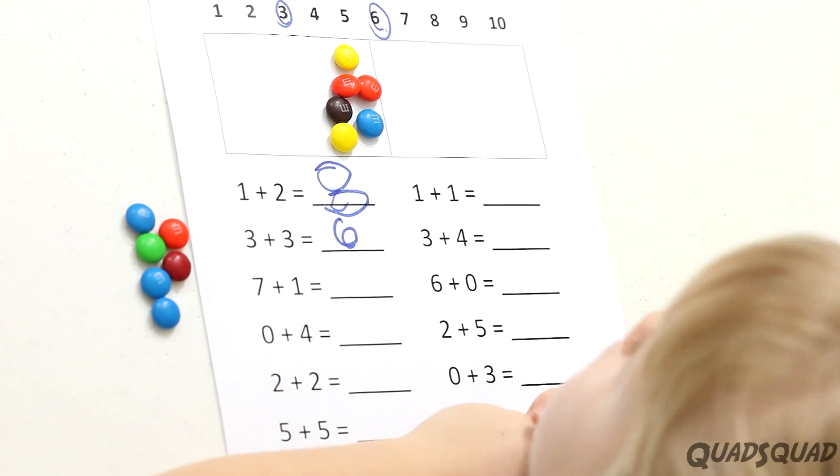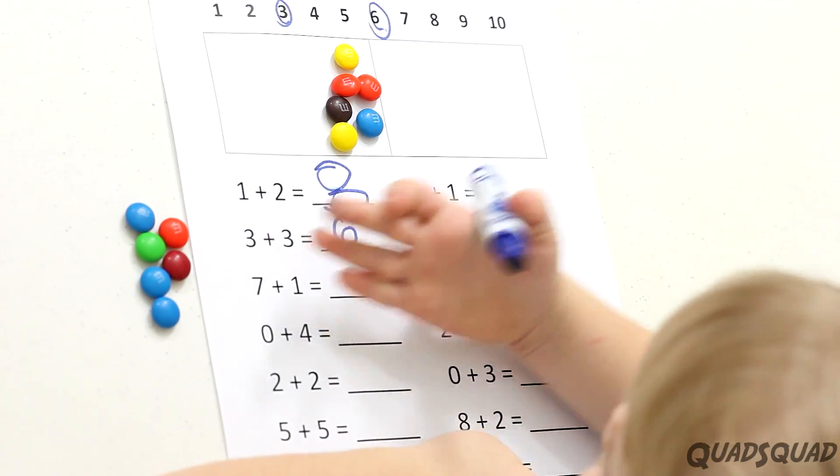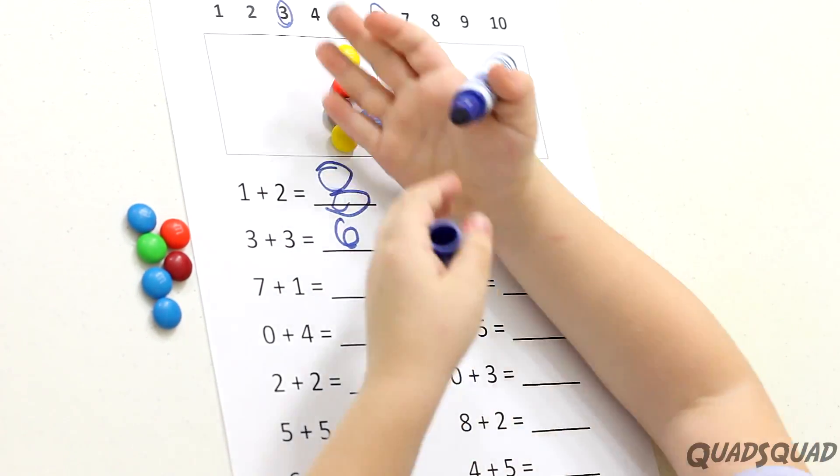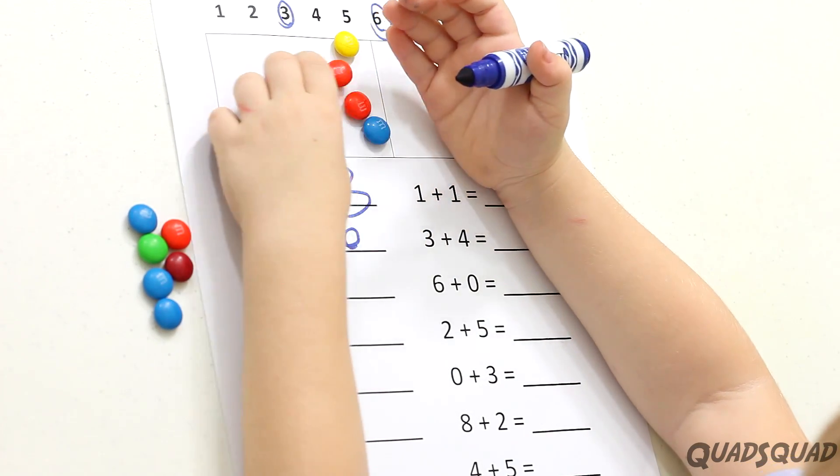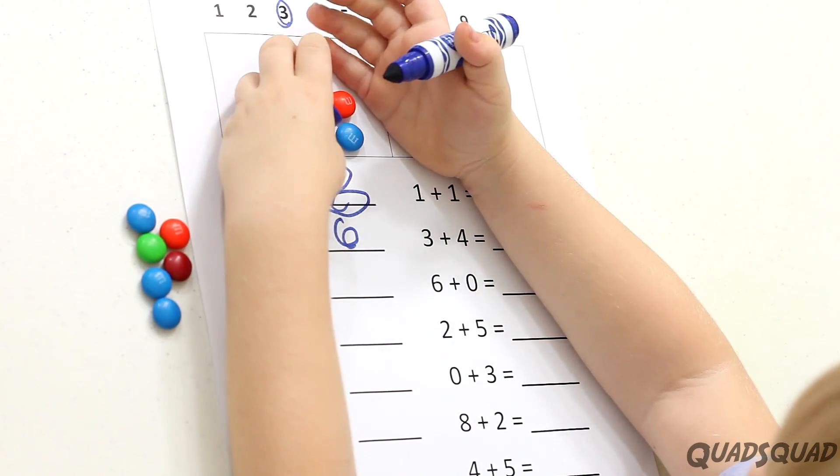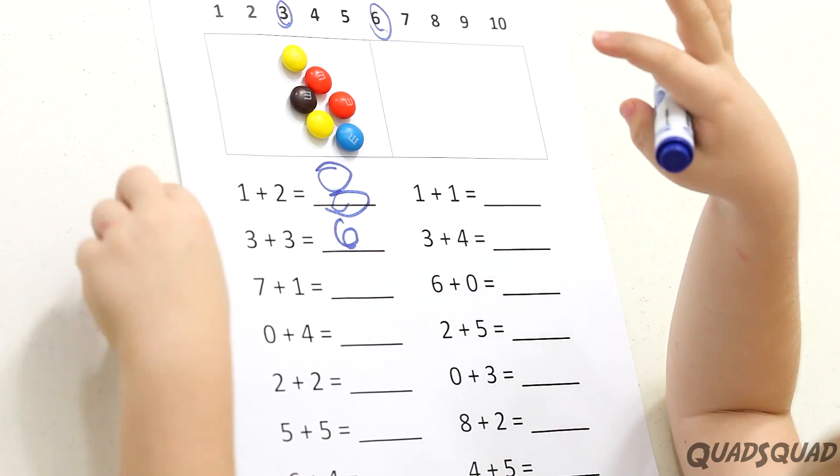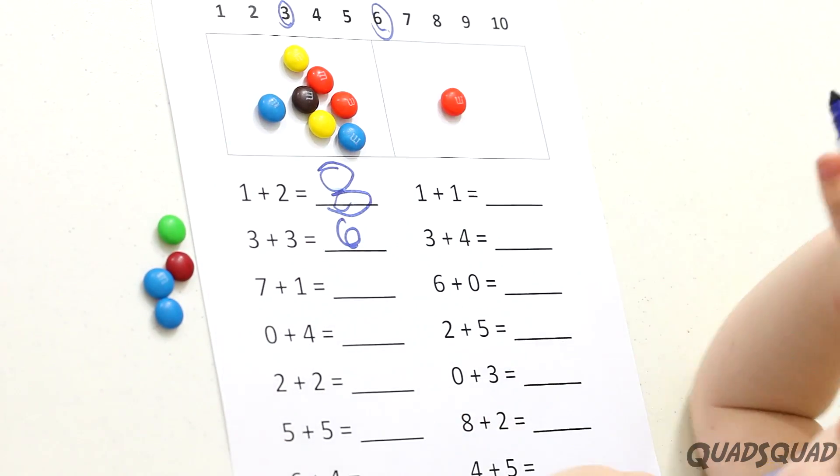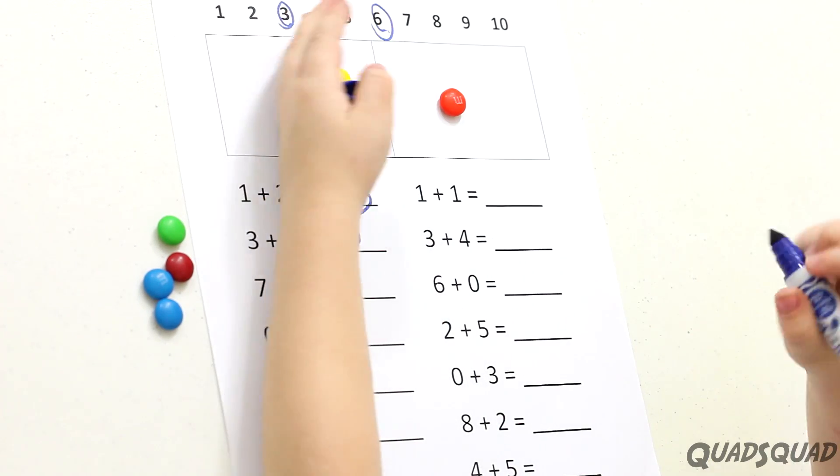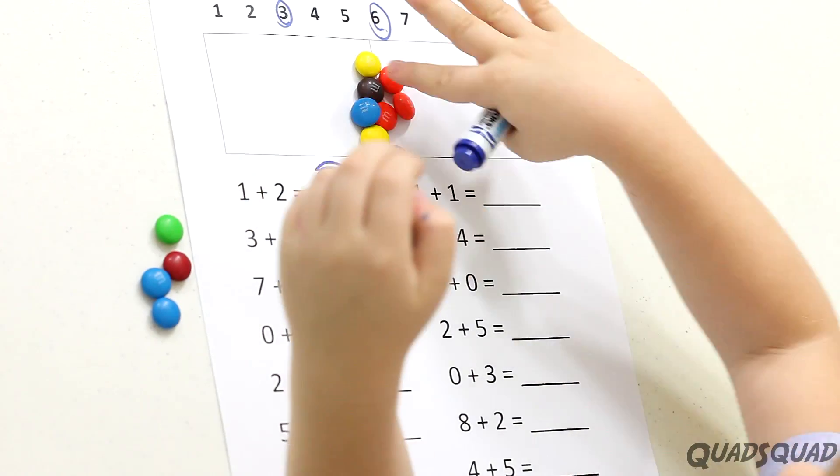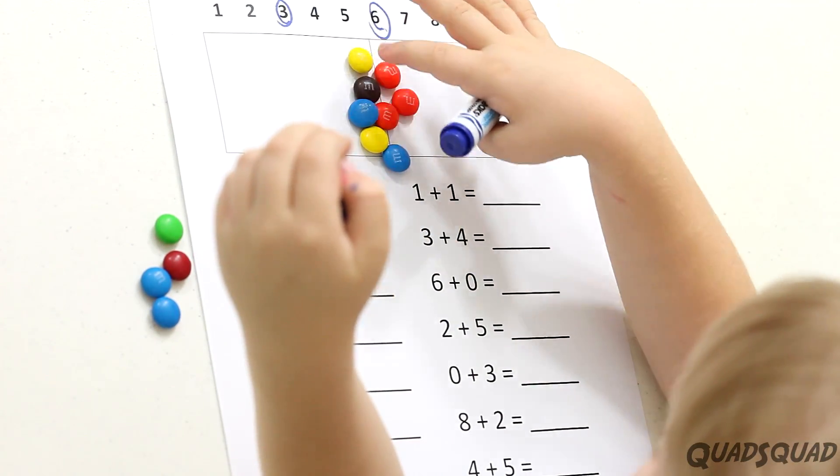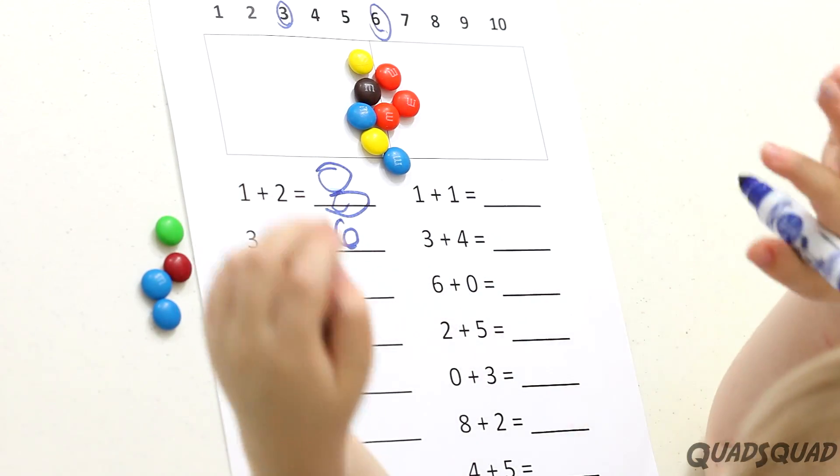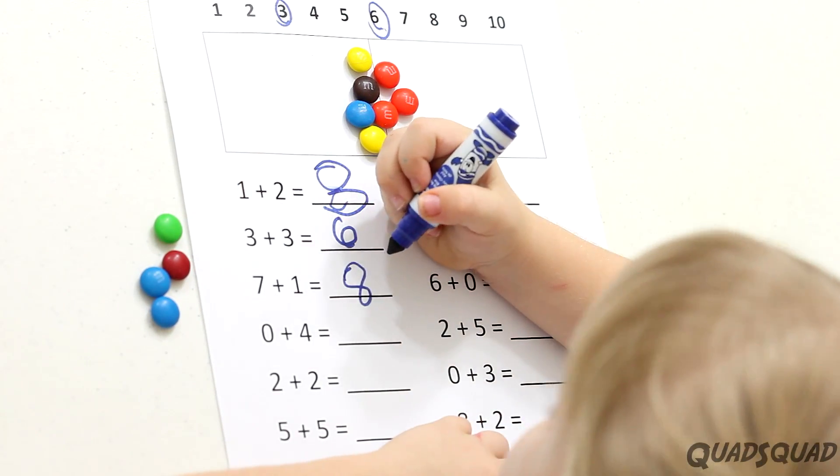The next question says, what's one plus seven? So we've got to get seven. That equals six. I need one more to do this one. Let's count them all up. One, two, three, four, five, six, seven, eight. So we write an eight.